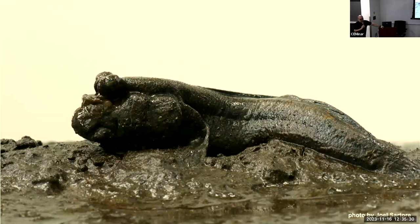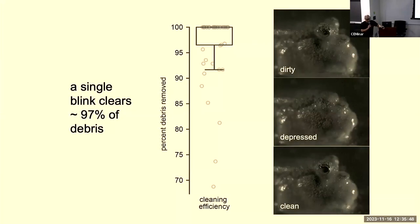Mudskippers in the wild are dirty — they're rolling around in the mud all the time. To replicate this in the lab, we sprinkled brine shrimp — a non-irritating, approximately sand-sized material — onto their eyes. As you can see when they blink, they are really effective at cleaning their eyes: a single blink can basically fully clear the cornea. Despite not having new glands or new muscles, this simple system is really effective at cleaning the eye.